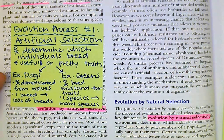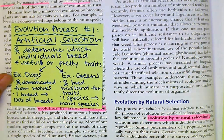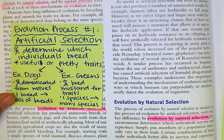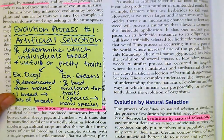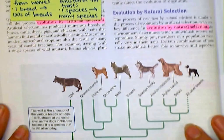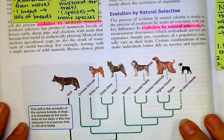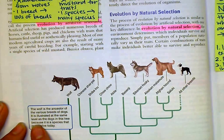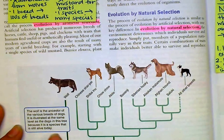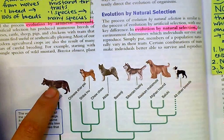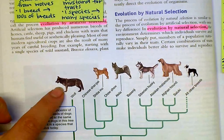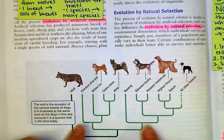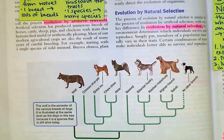I have two examples here. The first one is dogs — they're human domesticated from wolves. We had that one breed of wolves that was turned into hundreds of breeds. If we look at this phylogeny chart about our dogs, the wolf is the ancestor of the various breeds of dogs. It is illustrated at the same level as the dogs in this tree because it is a species that is still alive today — this is the ancestor of all of these guys, but since he's still alive today, he still has his own branch. Remember, we're thinking about family trees.